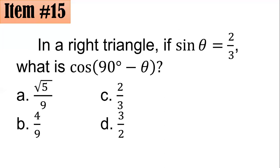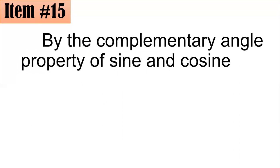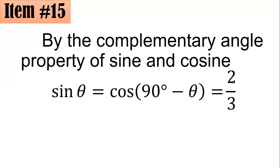Number 15: In a right triangle, if sine theta equals 2 thirds, what is cosine of the quantity (90 degrees minus theta)? Did you go for 4 square root of 5 over 9, 4 ninths, 2 thirds, or 3 halves? By the complementary angle property of sine and cosine, sine theta equals cosine of (90 degrees minus theta). Therefore the answer is still 2 thirds, letter C.